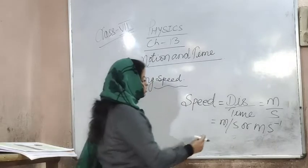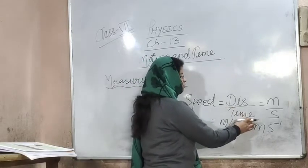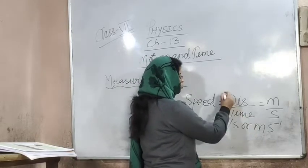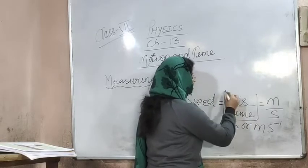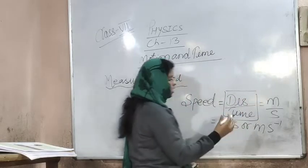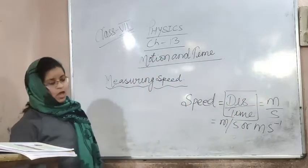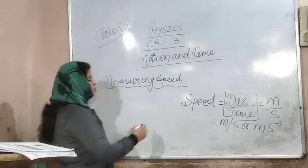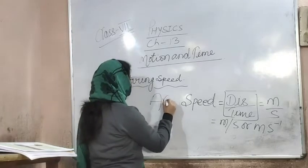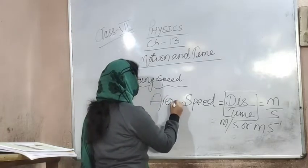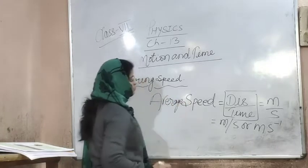Speed tells us that for a particular distance, how much time we travel — that is how we get the speed of some object like a car or a bus. Now in class, we will see what is the average speed.